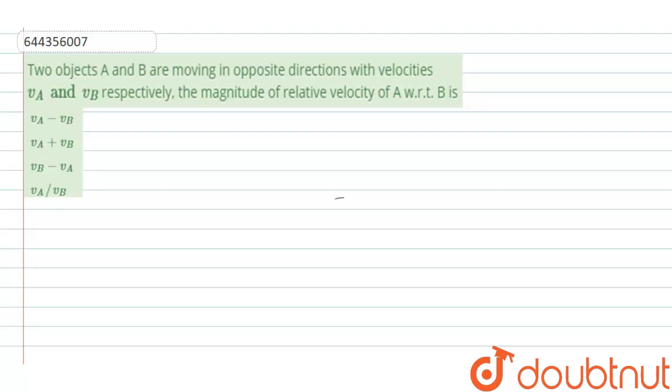Hi everyone, the question is given. Two objects A and B are moving in opposite directions with velocities VA and VB respectively. The magnitude of relative velocity of A with respect to B is how much?